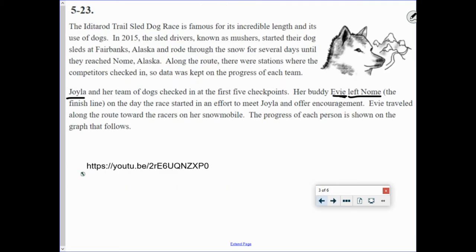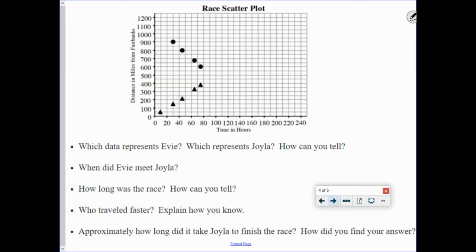Now again, we go back to here, and I just want to point out Joila and her team of dogs, they are the ones competing. Evie is a friend that's coming and giving encouragement. Which one of these is Evie? Which one is Joila? There are triangles and circles. Now, remember, your task is to answer these five questions. Don't you dare for this first one just say circles or triangles. No, I want you to say the triangles represent Evie or the circles represent Evie.